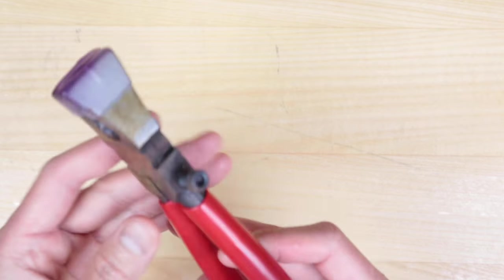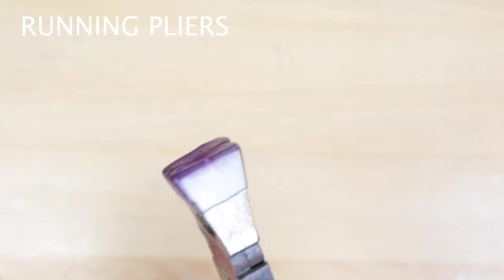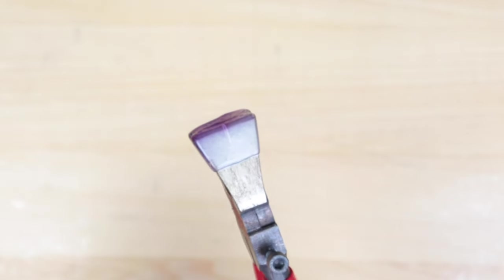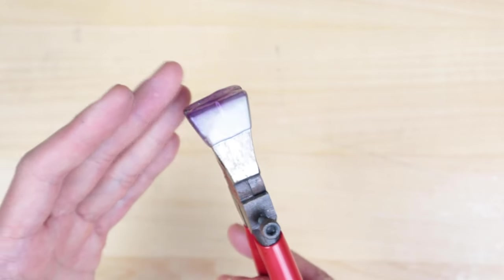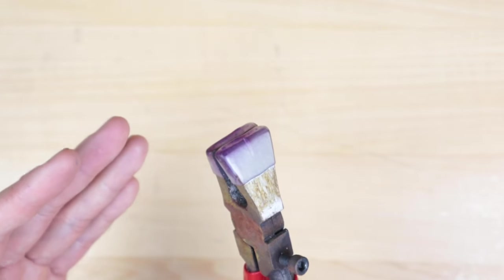After scoring the glass, you can either break it with your hands or you can use something like this called running pliers. This will help run the score on the glass and then it'll help break that glass on that score line. These pliers luckily aren't too expensive. They're only about $10, so you can pick them up easily and they will help tremendously. I wouldn't work in stained glass if I didn't have one of these.